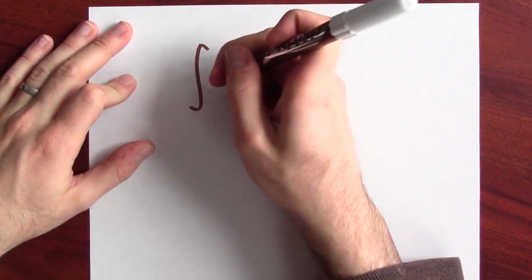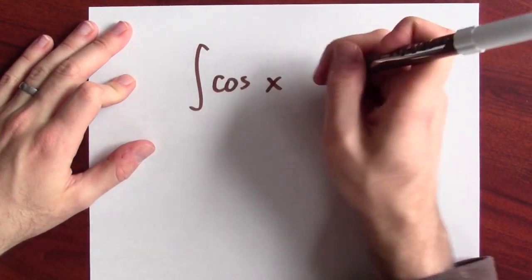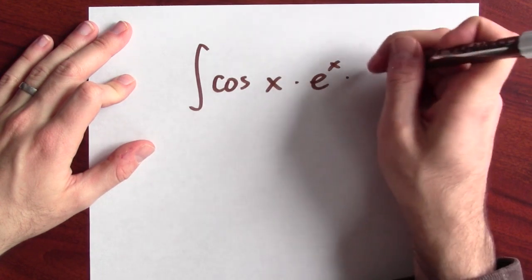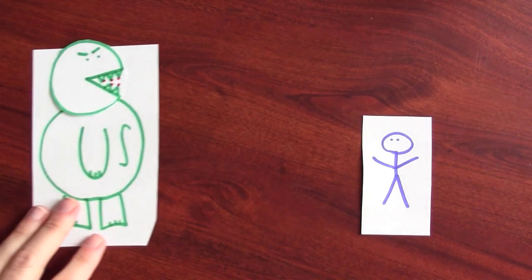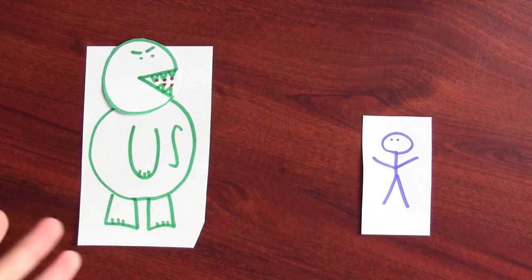Let's attack the indefinite integral of cosine x times e to the x dx. There's a metaphor here. There's really different ways to win the battle. Suppose this is you and this is the integral that you're trying to attack.